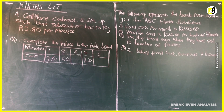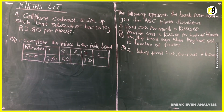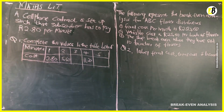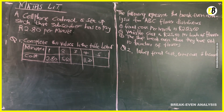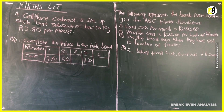The scenario is as follows: a cell phone contract is set up such that a subscriber has to pay two rand eighty cent per minute. We have a table giving detailed information about the relationship between the minutes and the cost. You can see that one minute equates to two rand eighty cent, two minutes to five rand sixty, and so on.